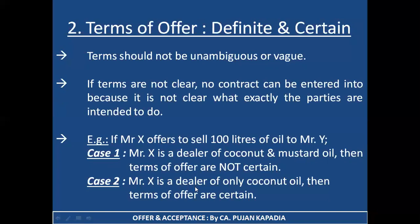In the second case, Mr. X is a dealer of only coconut oil — selling only one product. In this particular case, it is implied that the offer made is of coconut oil only, because Mr. X is not selling anything else. As a result, we can say the terms of the offer are certain. So, friends, here the statement of offer is the same, but depending on the situation, the terms may or may not be certain.